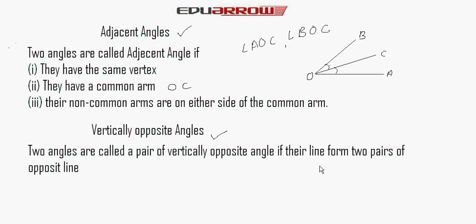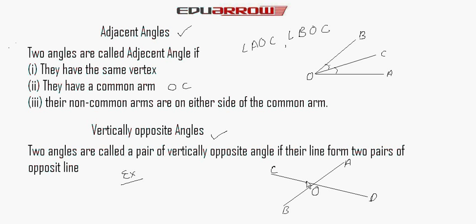In the figure, line AB and line BC intersect. Vertically opposite pairs are: angle AOC is vertically opposite to angle BOD, and angle AOD is vertically opposite to angle COB. An important property is that vertically opposite angles are equal: angle AOC equals angle BOD, and angle AOB equals angle BOC.